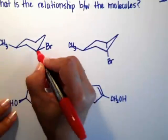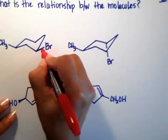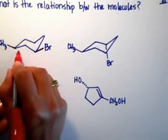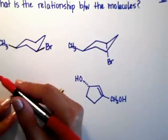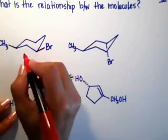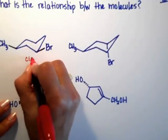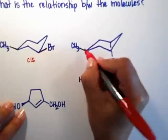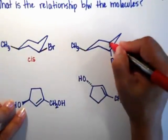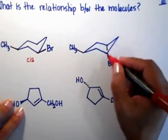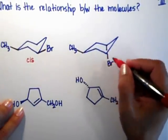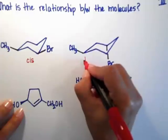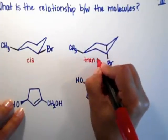One more thing we need to check. Going up and up, my two substituents are on the same side of the ring — they're going both up, so this is the cis. On this one the methyl is going up, but the halide is going down. And if one is up and the other one is down, that means that they are trans to each other.